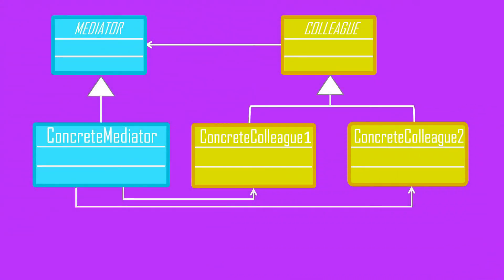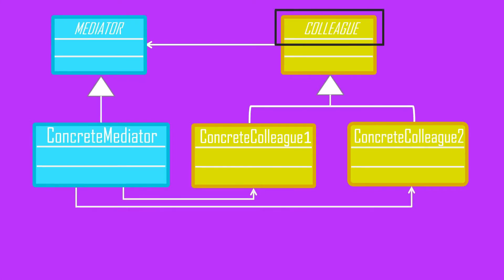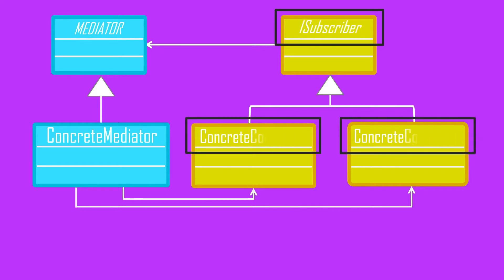So this is the mediator pattern UML — the naming conventions are as per the Gang of Four design pattern book. I would like to change it a bit: let's rename 'Colleague' to 'ISubscriber', and 'ConcreteColleague1' and 'ConcreteColleague2' to 'Subscriber1' and 'Subscriber2'. Don't worry, we will discuss each component in a bit.